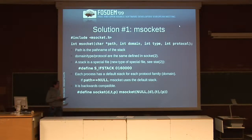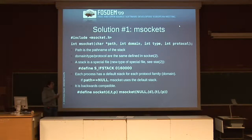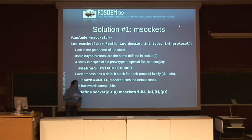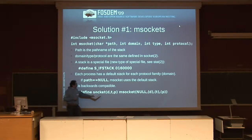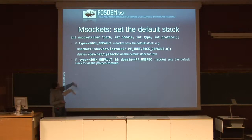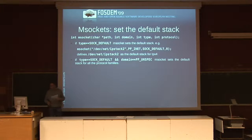With this system call, we can write programs using multiple stacks concurrently. But we also need backwards compatibility. So we define the concept of a standard stack: if you call msocket with the first argument set to null, it means we want to refer to the standard stack. The old socket call can be treated as msocket with the first parameter equal to null. msocket also defines the standard stack when the type is SOCK_DEFAULT, so the same call can be used to either use a stack or to define the standard stack.